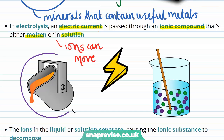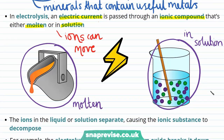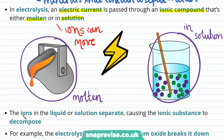A compound that's molten is just one that's been melted, as shown on this left hand side diagram. And a compound that's in solution is just one that's been dissolved in water. In the electrolysis process, the ions in the liquid or solution separate from each other, which causes the ionic substance to decompose.